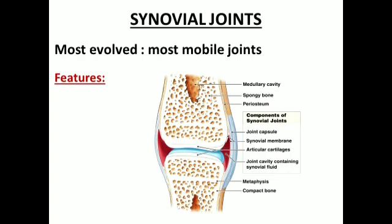Before going into the details, let us know a little bit about synovial joints. We have fibrous joints, cartilaginous joints, and synovial joints in our body. Synovial joints are the most evolved because of their degree of mobility — they are freely movable. The factors responsible for free movement include the capsular covering: synovial joints have an outer thick fibrous capsule forming the covering of the joint, with a synovial cavity inside filled with synovial fluid.